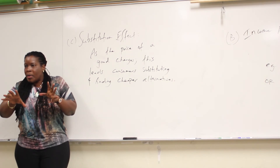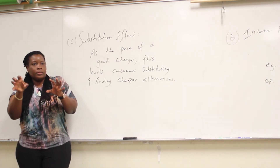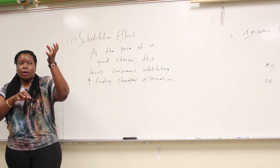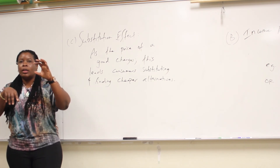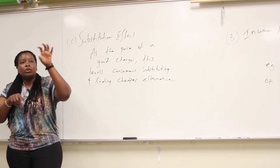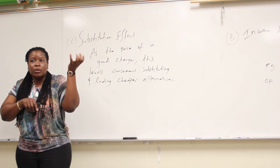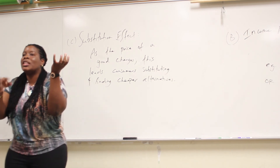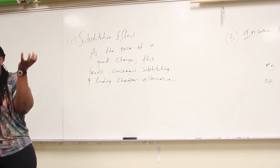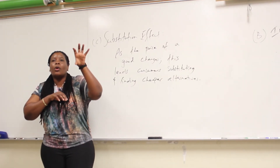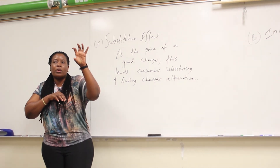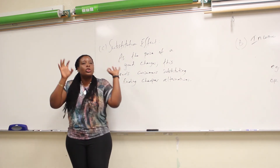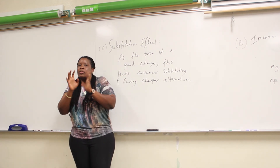Think of it this way: you have your income and you normally buy A, B, C, D. When there's a change in the price of a good — say A gets cheaper — you do a mental substitution. Because A is cheaper and B, C, D did not change, A now looks more attractive. It's a cheaper good in comparison to the other stuff you normally buy, so you buy more of it. If A gets more expensive, compared to B, C, D that you normally buy, A looks less attractive, so you move away from it.